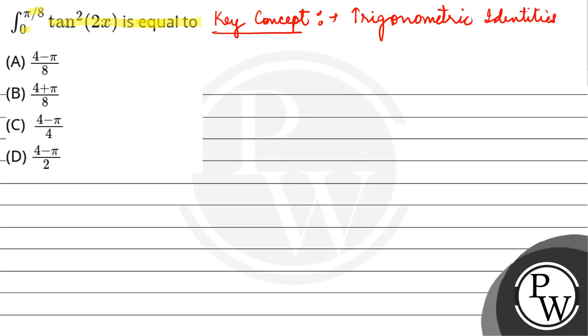That is secant square theta minus tan square theta is equal to 1. So if you want tan square theta, then it will be secant square theta minus 1. So here it will be...